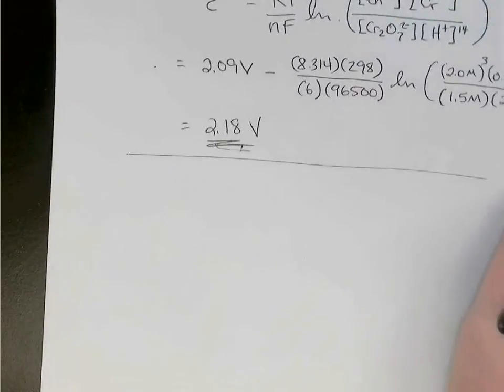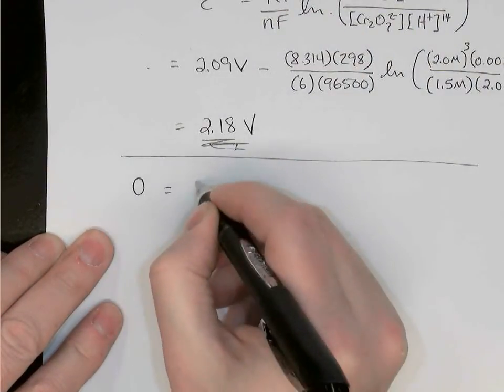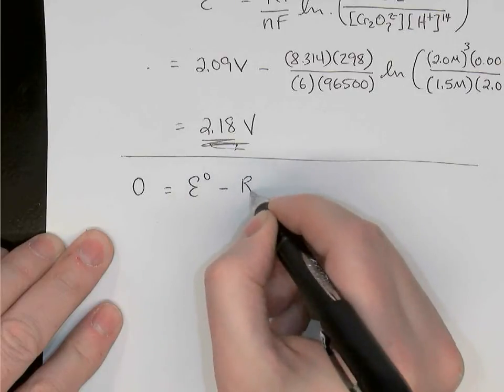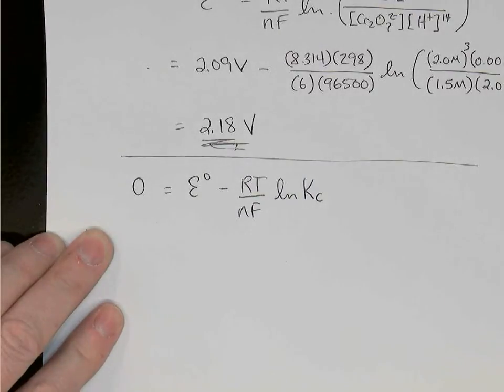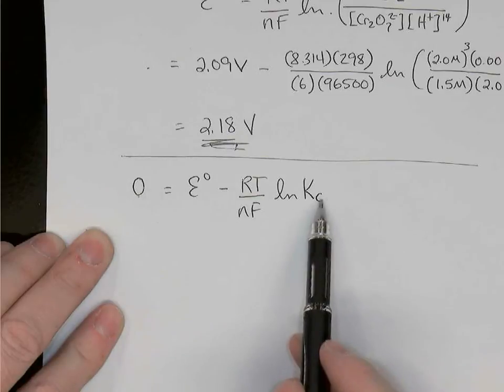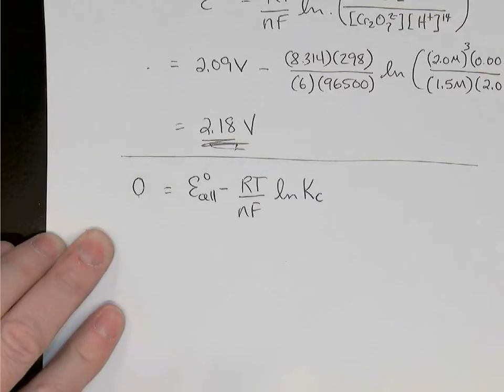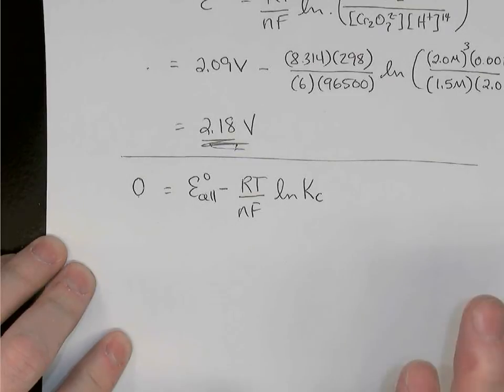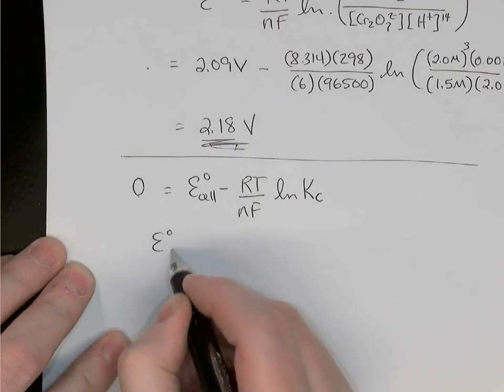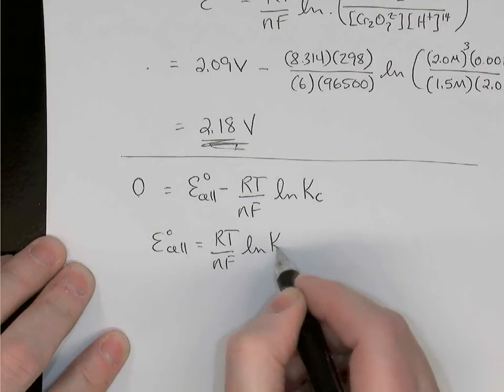So let's take those two things and make those changes in the Nernst equation. So we'll say 0 equals E0 minus RT over NF ln Kc. So we made the cell potential 0, and we made Q equal to Kc. E0, it doesn't change, right? That's the cell potential if all the concentrations were at one molar, which is then going to be a non-equilibrium position. So now if we rearrange that, we can say E0 cell is equal to RT over NF ln Kc, which lets us find Kc for a reaction, a redox reaction, if we know E0.